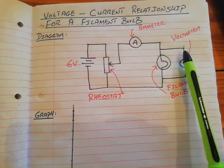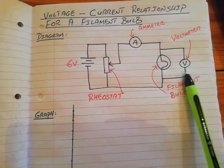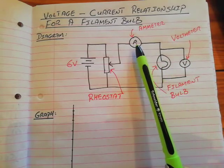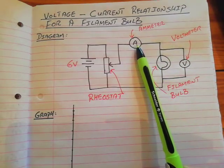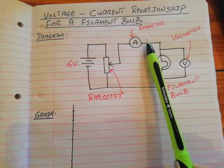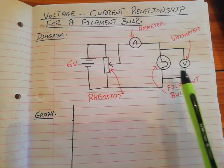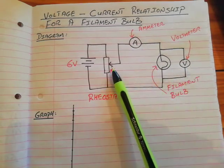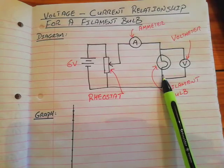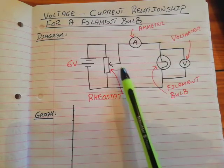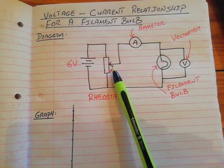The voltmeter will measure the voltage between the ends of the filament bulb, and again an ammeter will measure the current flowing through the filament bulb. The voltage between the ends of the filament bulb is varied or changed by moving the slider on the rheostat.